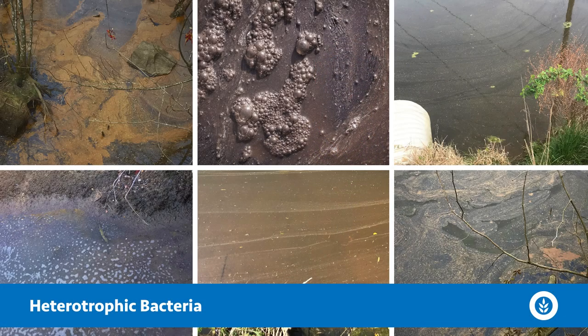There are many other types of biofilms. Some common ones include heterotrophic bacterial biofilms, which often just look dirty or brownish in color and sometimes a little bubbly on the surface of the water column.